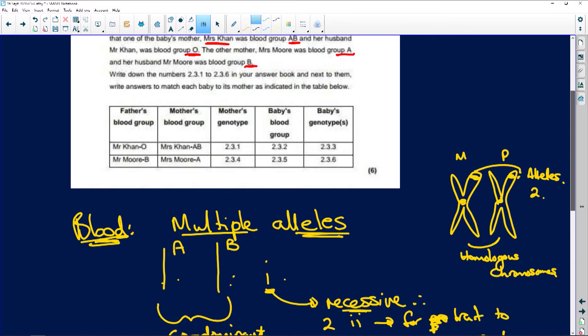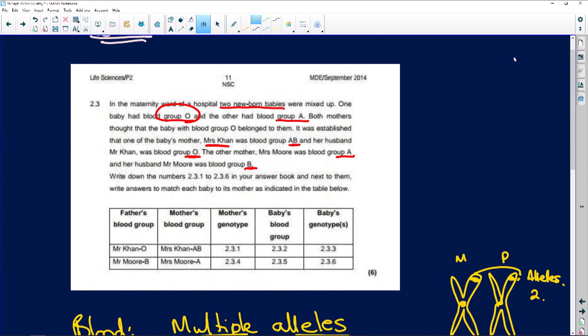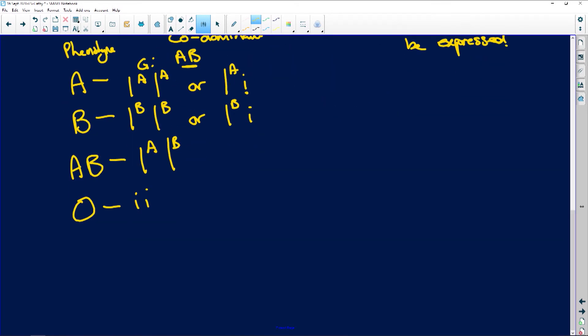Now, going back to our question. This baby with blood group O is going to be... When they ask for the baby's genotype, the baby's genotype is going to be ii. And the baby with blood group A is going to be either IA IA or IA i. So heterozygous A or homozygous A.